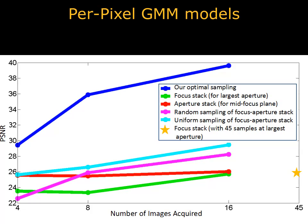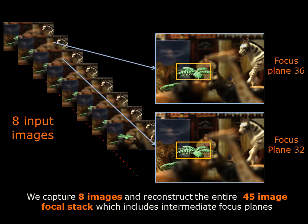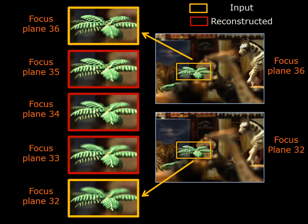What follows are some results demonstrating compressive Epsilon photography. First, we vary only the focus of the camera. Here we capture 8 input images at different focus settings, then reconstruct a 45-image focus stack. Let's look at the captured image's focus near the palm tree. Note that the focus changes from the front leaf to the rear one. As we expect, this change occurs gradually in the reconstructed stack, and the intermediate leaves are brought into focus by the reconstruction algorithm.